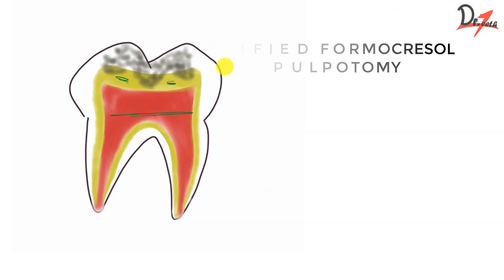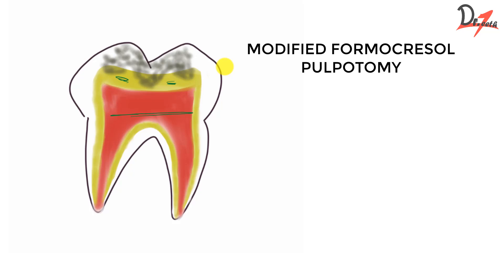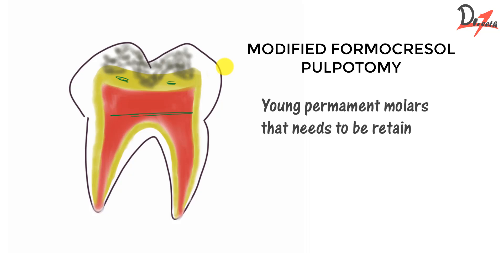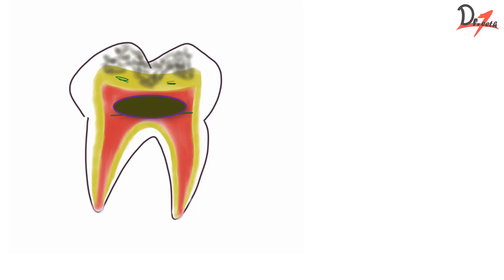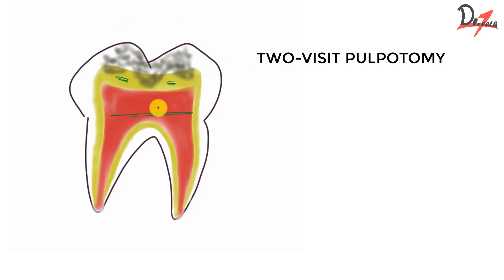We also have a modified formacresol pulpotomy, used in young permanent molars that need to be retained for only a short time. The procedure is the same except we keep the formacresol pellet sealed in the chamber with ZOE. We also have the two-visit pulpotomy, indicated when bleeding during pulpotomy is uncontrollable or sluggish and difficult to control, or when there is pus in the chamber or a history of pain.